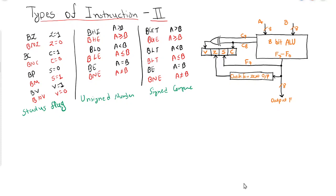In the next video we will see numerical examples showing how overflow, zero, sign, and carry flags are set according to mathematical or arithmetic calculations, and how they help predict whether a branch will take place. We will end our session here and continue in the next session. Thank you.